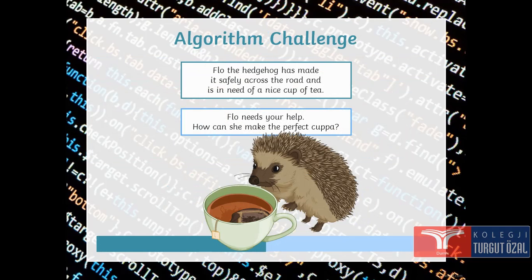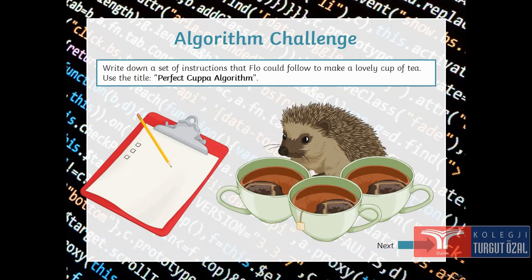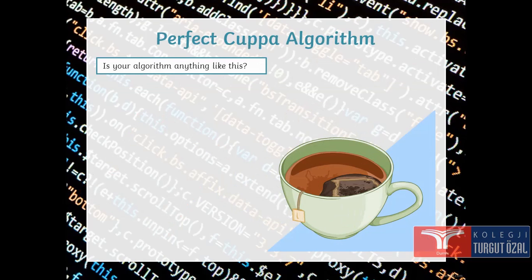Algorithm change. Flow, the hedgehog, has made it safely across the road and is in need of a nice cup of tea. Flow needs your help. How she can make the perfect cup of tea or cuppa? Write down a set of instructions that Flow could follow to make a lovely cup of tea. Use the title perfect cuppa algorithm and I will see this.